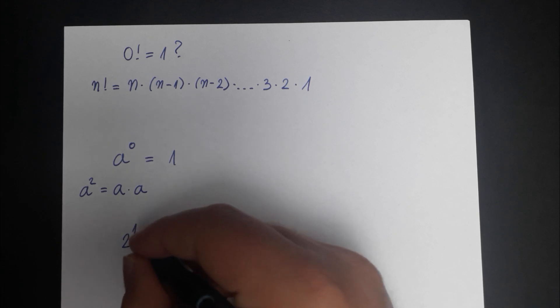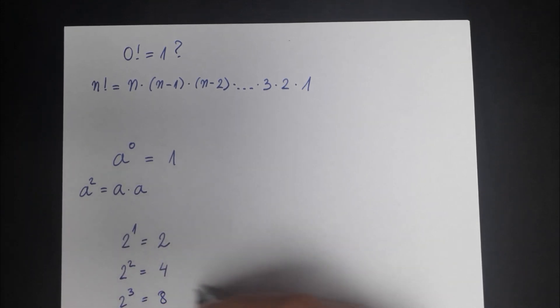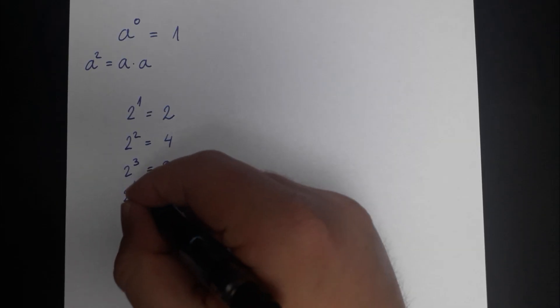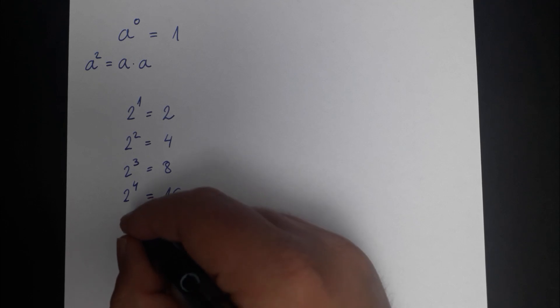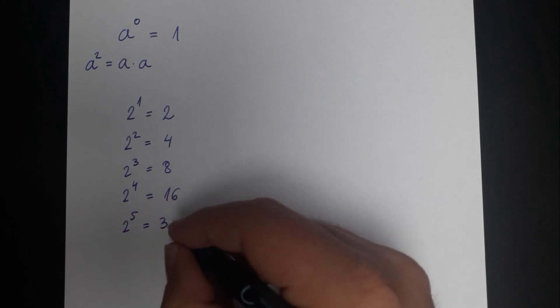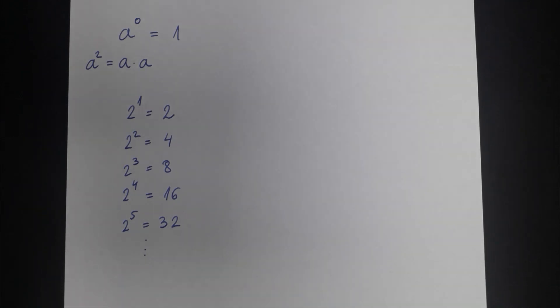2 to the power 1 is equal to 2. 2 squared is equal to 4. 2 cubed is equal to 8. 2 to the 4th power is equal to 16 and 2 to the 5th power is equal to 32 and so on. You are used to doing it forward. You do it forward and the numbers get bigger.